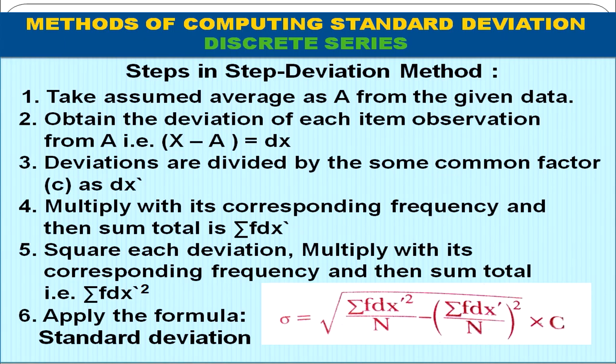Now we discuss the step deviation method for discrete series. Steps: first, identify A. Second, take deviations dx = x − A. Third, divide by common factor c to get dx'. Fourth, multiply by corresponding frequencies and sum to get Σfdx'. Fifth, square dx', multiply by frequencies and sum to get Σfdx'². Apply the formula: σ = √(Σfdx'² / n − (Σfdx' / n)²) × c. Remember: c is outside the square root.